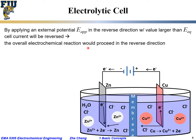The overall electrochemical reaction proceeds in the reverse direction. On the zinc electrode, instead of zinc losing an electron to become zinc ion, the zinc ions in solution now combine with electrons from the electrode and form zero-valence zinc metal, which gets deposited onto the zinc electrode — assuming no air in solution and that the zinc concentration is much higher than the proton concentration. On the copper electrode, instead of copper ions being reduced, the copper metal atoms release electrons and form copper ions that dissolve into the solution.